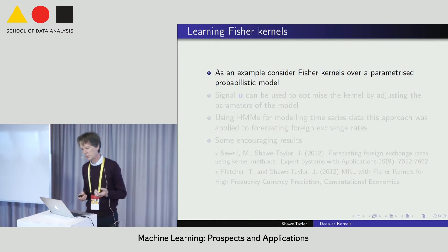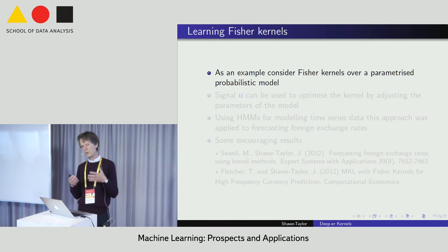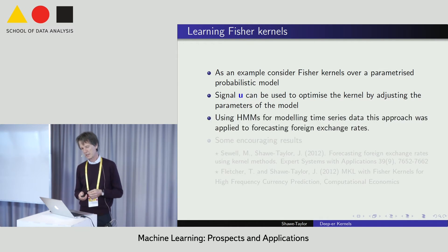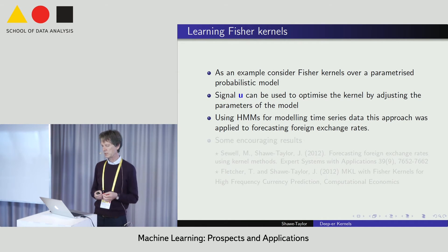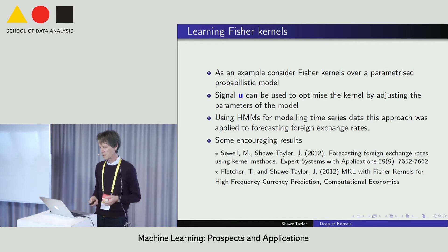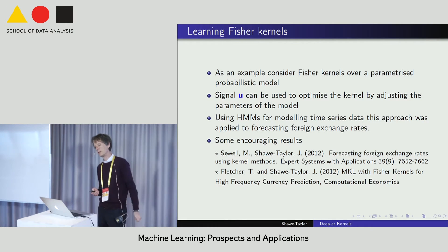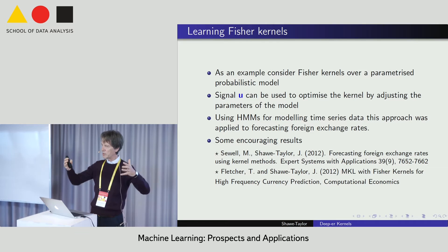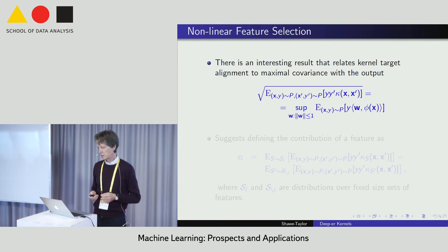As an example, we consider a Fisher kernel over a parameterized probabilistic model. The signal u comes back and we use it to adapt the parameters of the probabilistic model in order to improve the Fisher kernel for the task at hand. We did this modeling with HMMs for time series data forecasting foreign exchange rates, and were able to adapt the Fisher kernel based on this signal to improve performance.